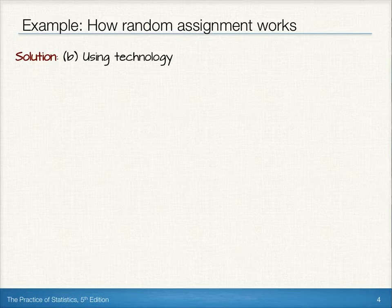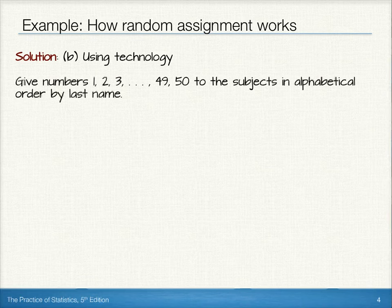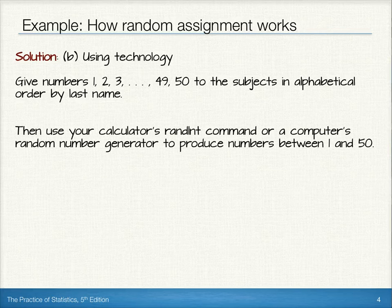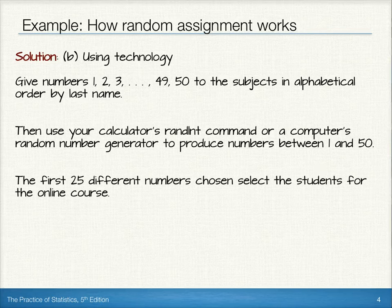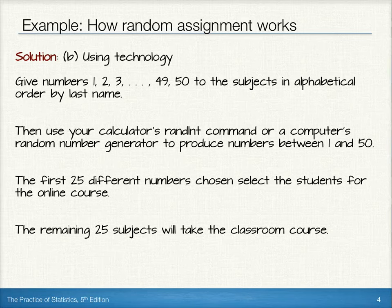We could also use technology to assign our treatments. We could give numbers 1, 2, 3, and so on all the way up to 50 to the subjects in alphabetical order by last name. Then we could use our calculator's randint command or a computer's random number generator to produce numbers between 1 and 50. The first 25 different or unique numbers chosen would select the students for the online course. Remember, we have to ignore repeats when they come up. The remaining 25 subjects would take the classroom course.